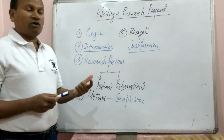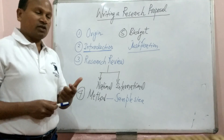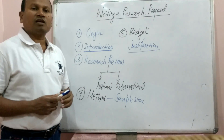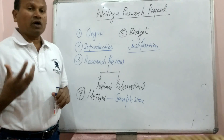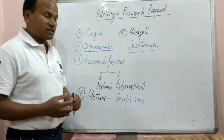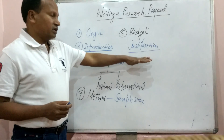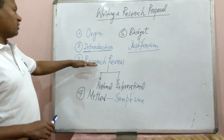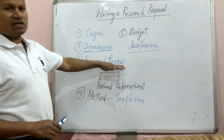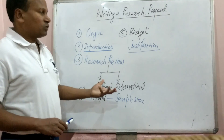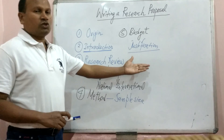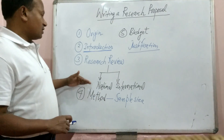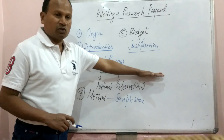All justifications are to be written just after the budget. And after writing the budget, whatever research review or literature review you have carried out requires a bibliography, which we call references. The bibliography may be part of the literature review section or written at the end.